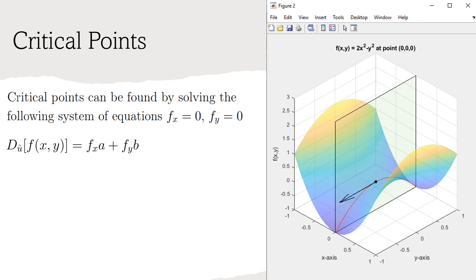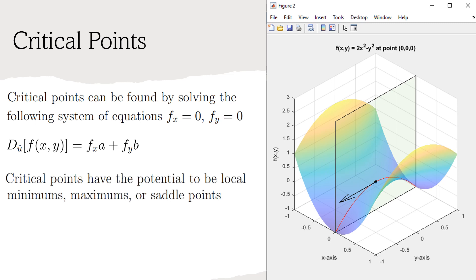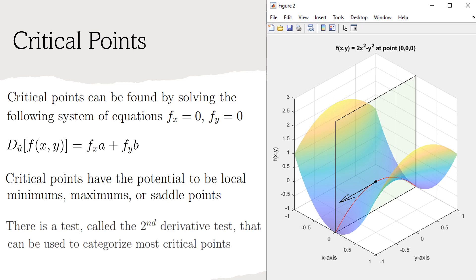This means that the point is, in a sense, on flat ground. When standing on flat ground, it is possible to be on a perfectly flat plane. It is also possible to be at a relative minimum or maximum value. However, another possibility exists, called a saddle point, an example of which is in the plot to the right. The second derivative test can categorize most critical points as either relative minimum, relative maximum, or saddle points.